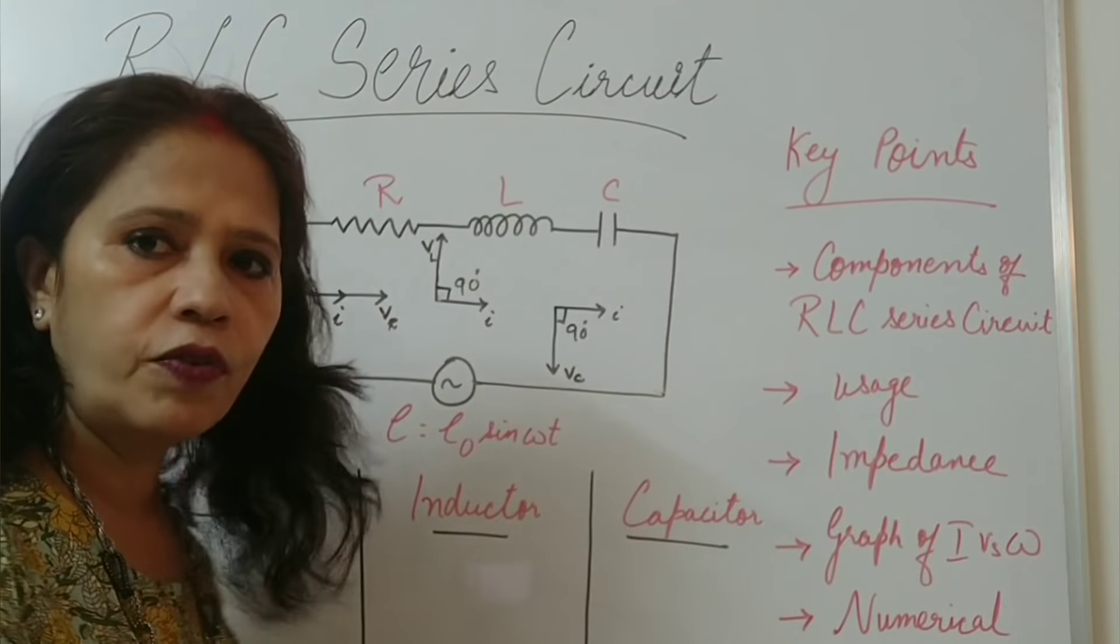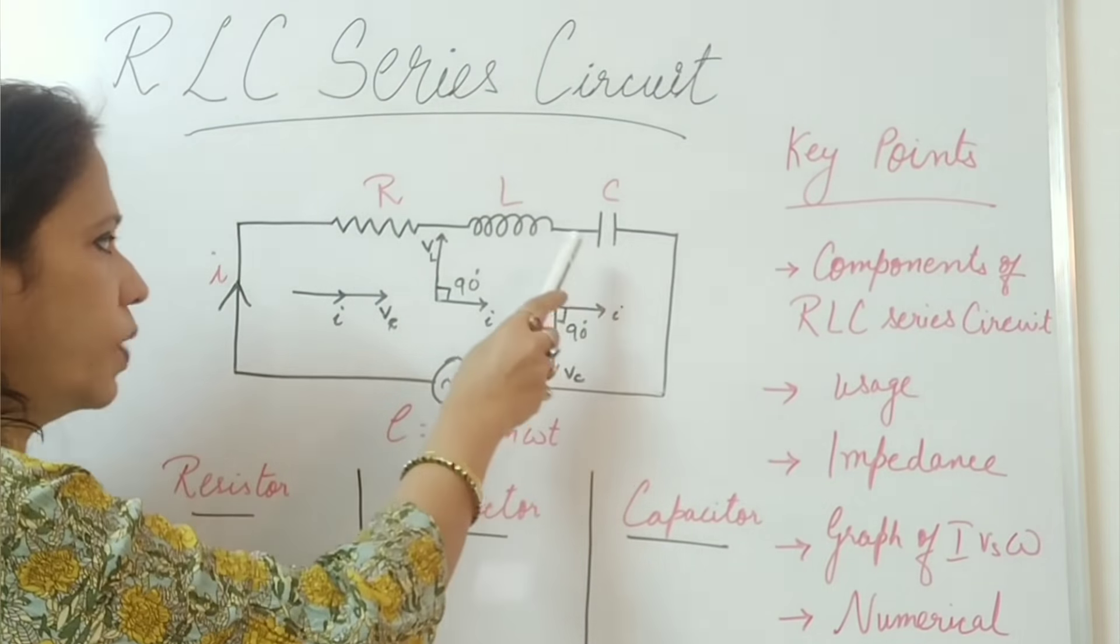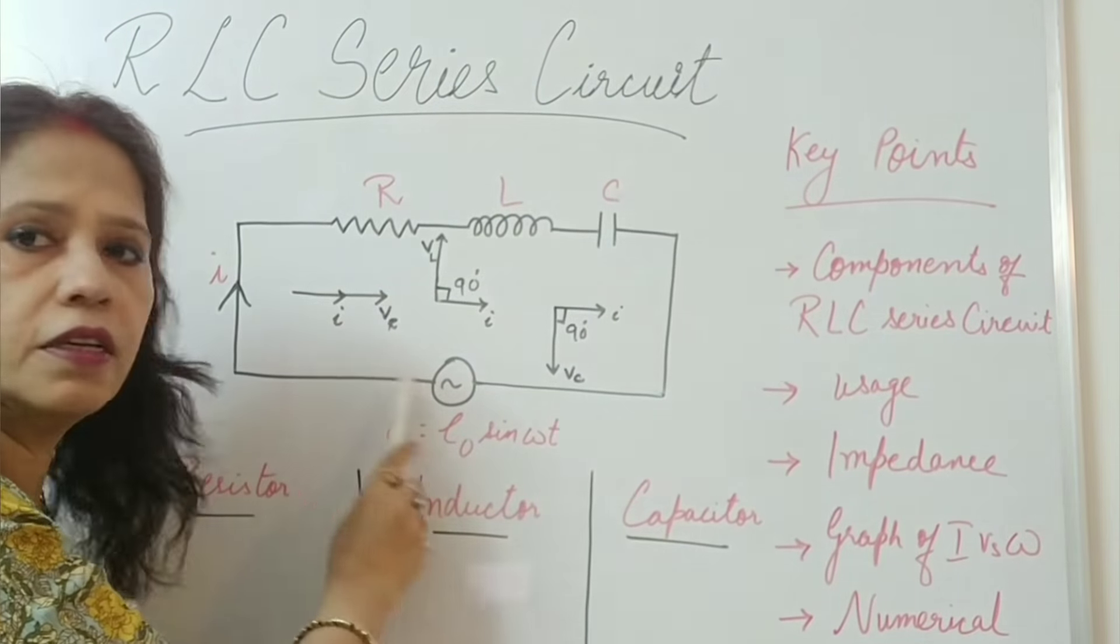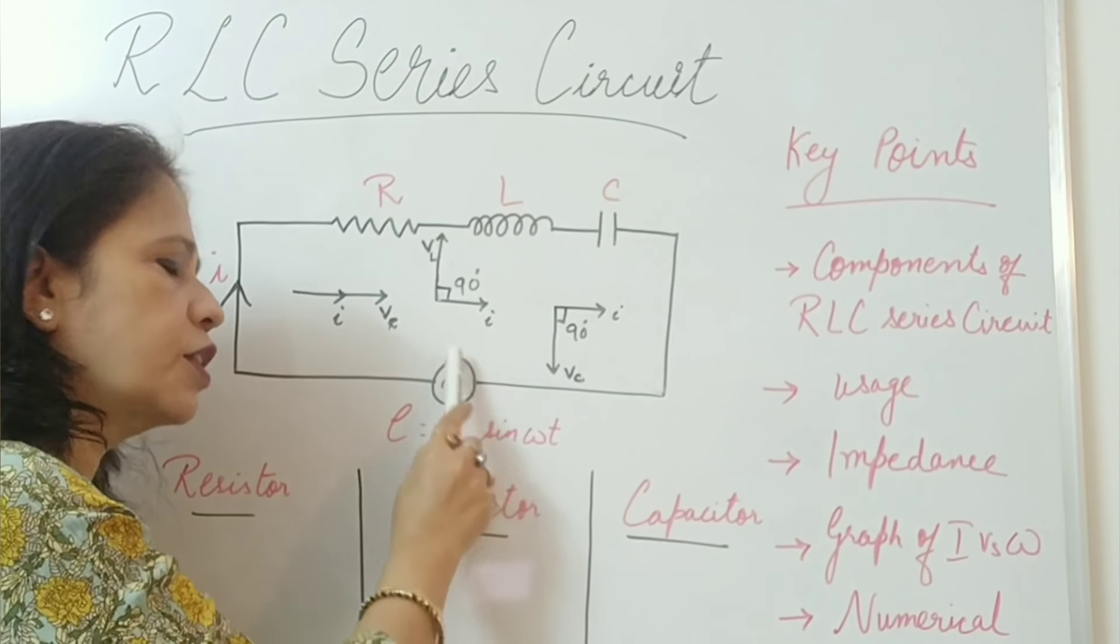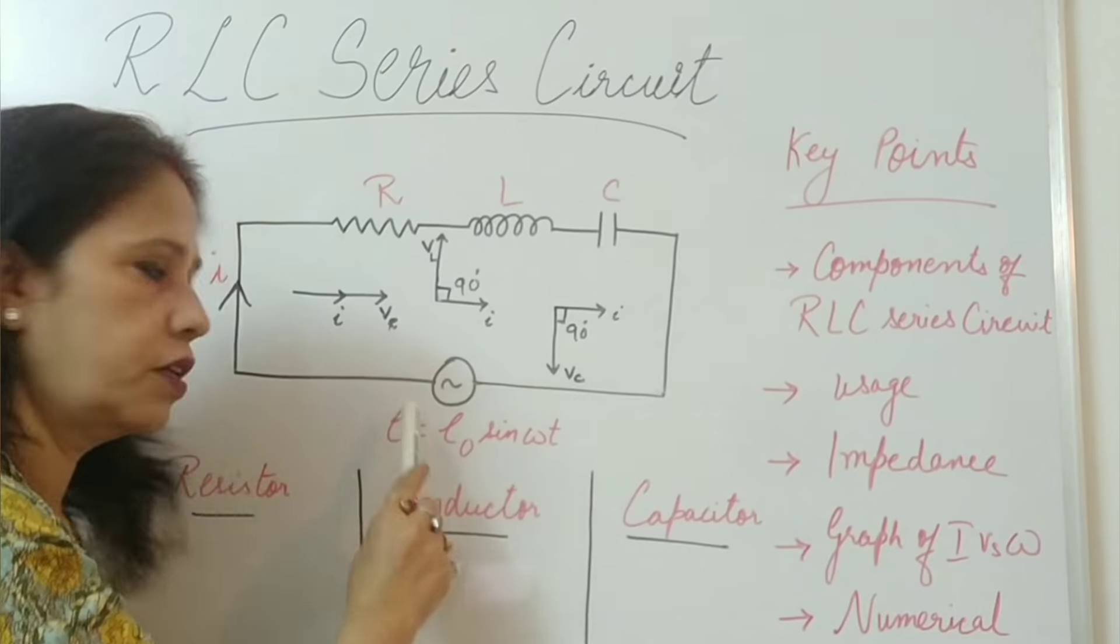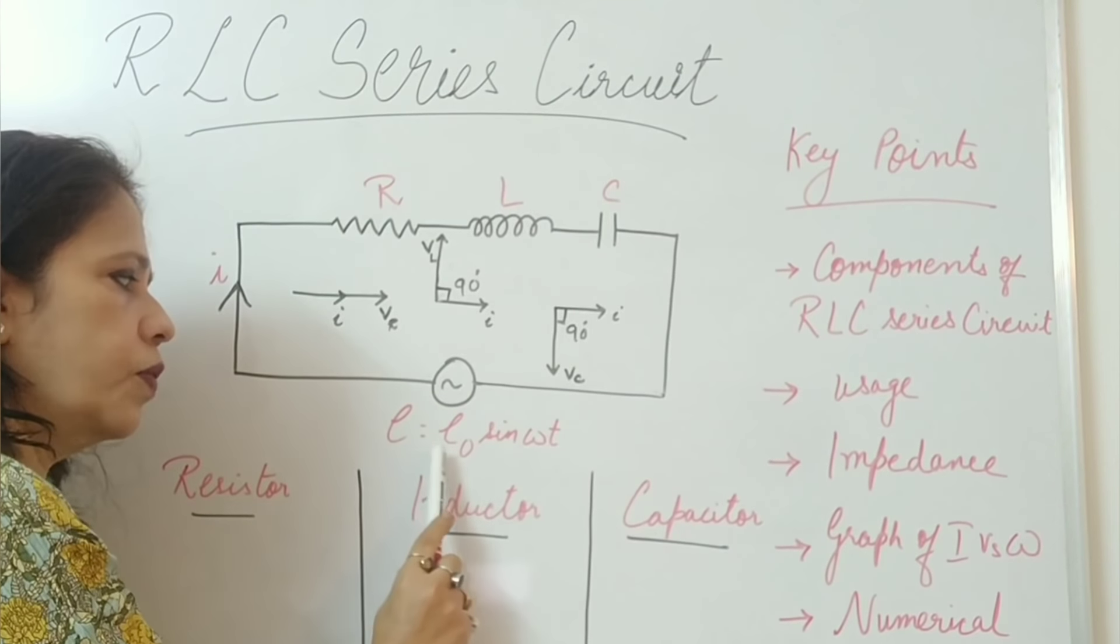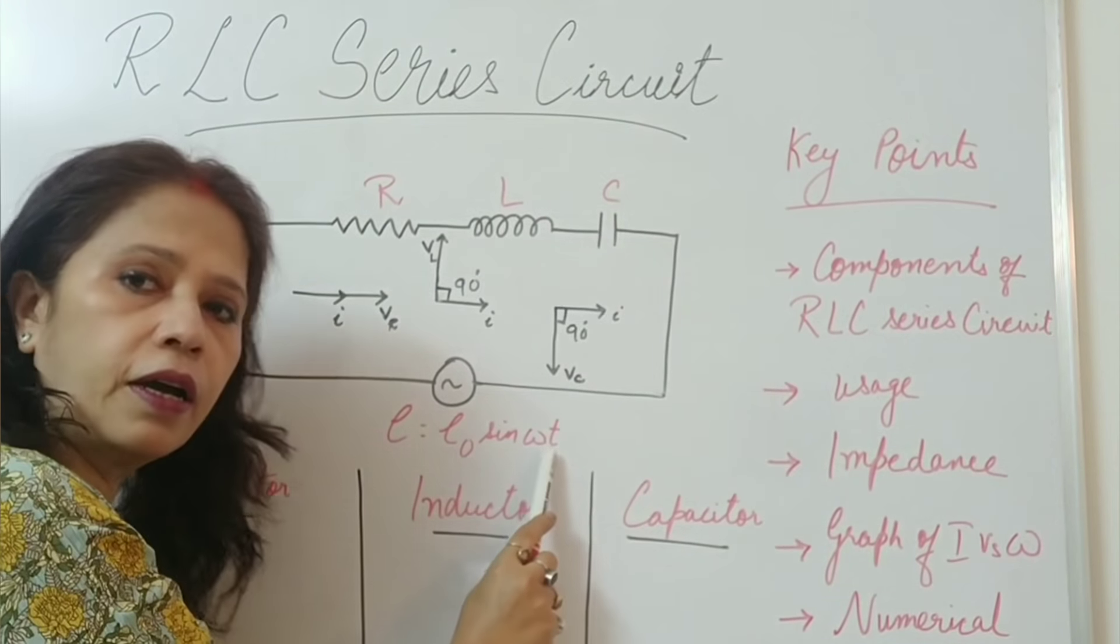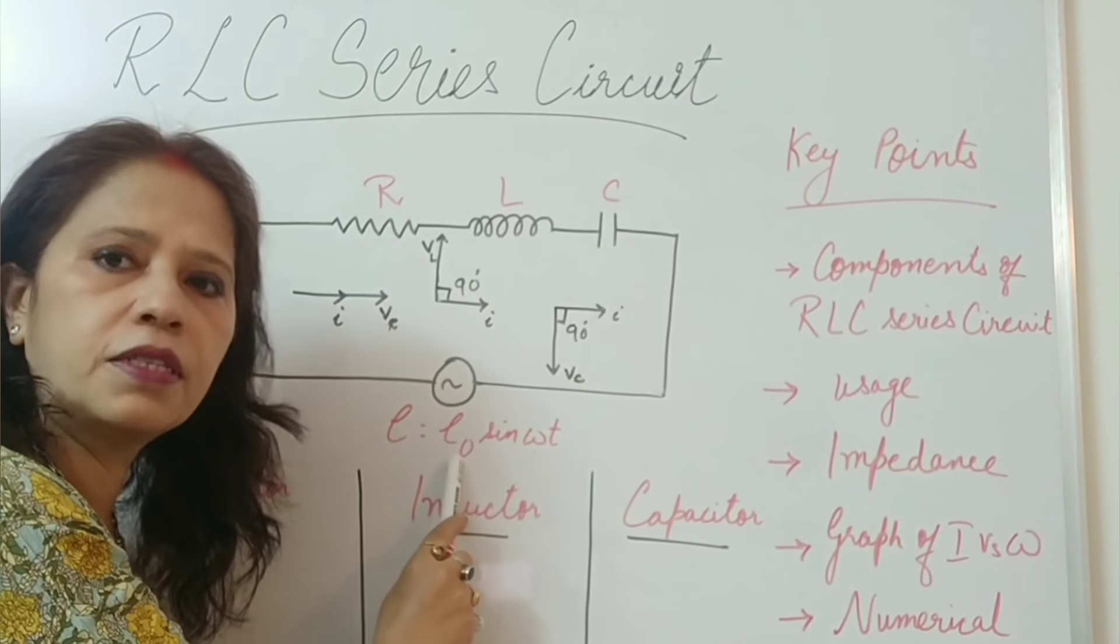So to start with resistor, inductor and capacitor, you can see all these are connected in series. And this is your AC supply voltage which is given here E equals to E naught sine omega t. Omega being the angular frequency, E naught is the maximum voltage.